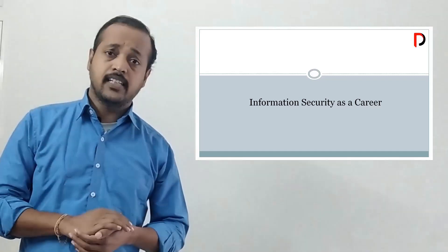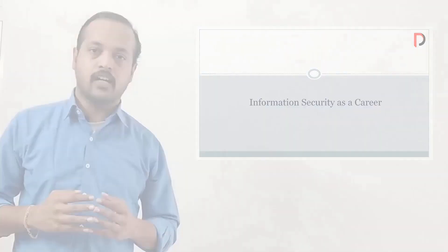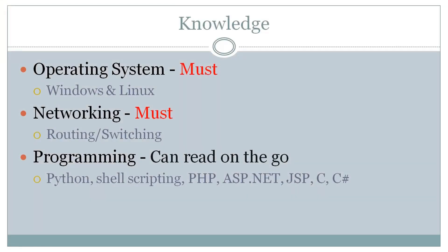If you want to enter the security field, there are two base areas you need to know. One is operating system knowledge — Windows and Linux. You need to understand how to run services and processes, and ultimately be able to compromise an operating system. Operating system knowledge is a must for security.